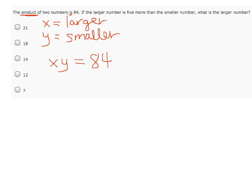Now the second part of this problem says, if the larger number is five more than the smaller number, so we know our larger number x equals five more. If you have five more than something, you add five to that something, and this something, in this case, is the smaller number, or y.